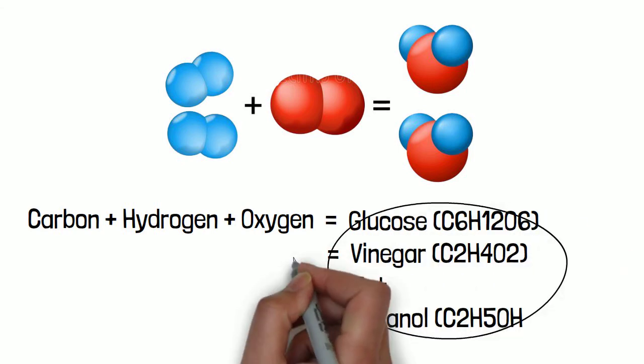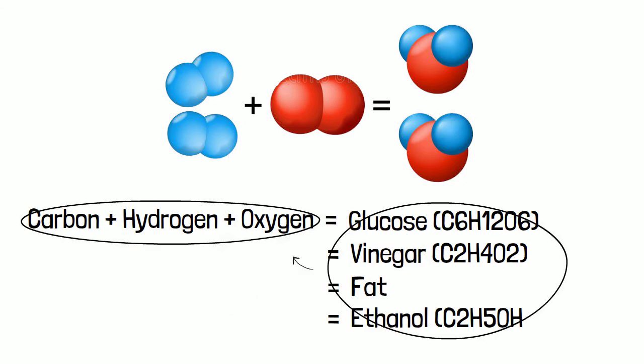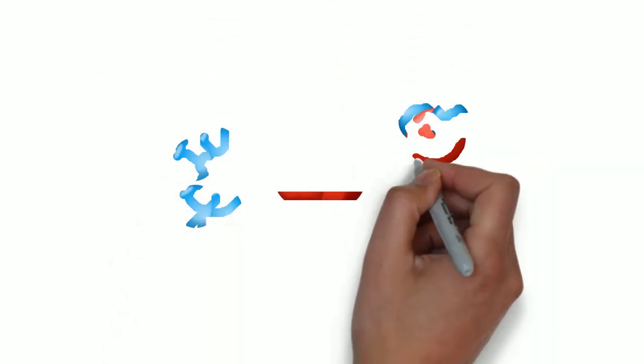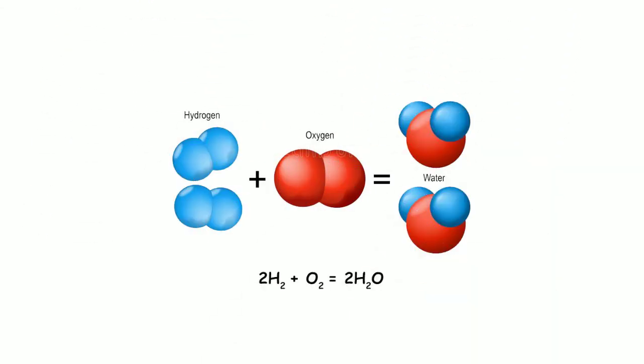Glucose, fat, ethanol and vinegar are nothing like each other, but they are all made from the same elements. In the case of hydrogen and oxygen gas, if you react them together one way, you get liquid water.